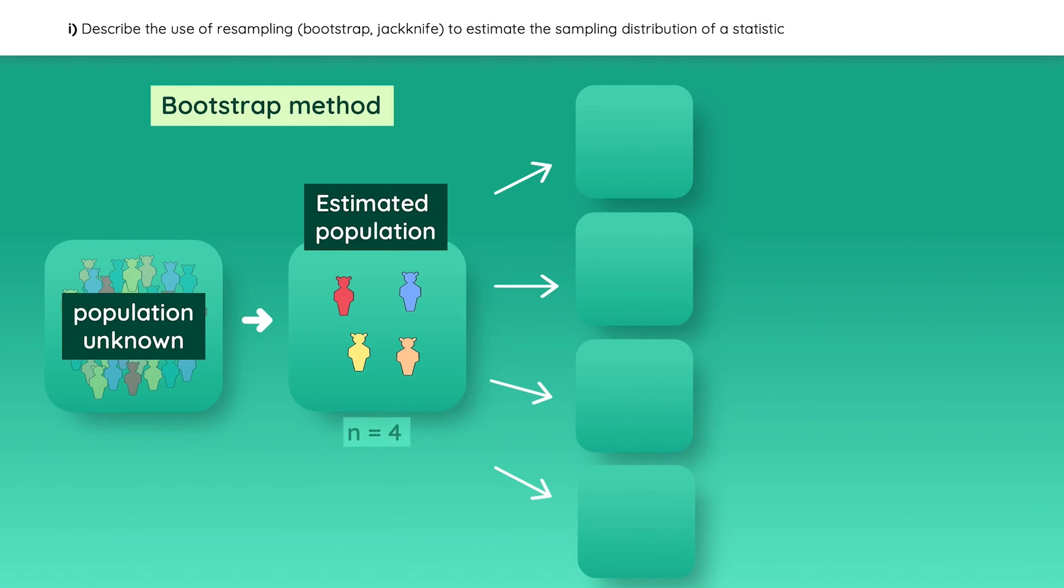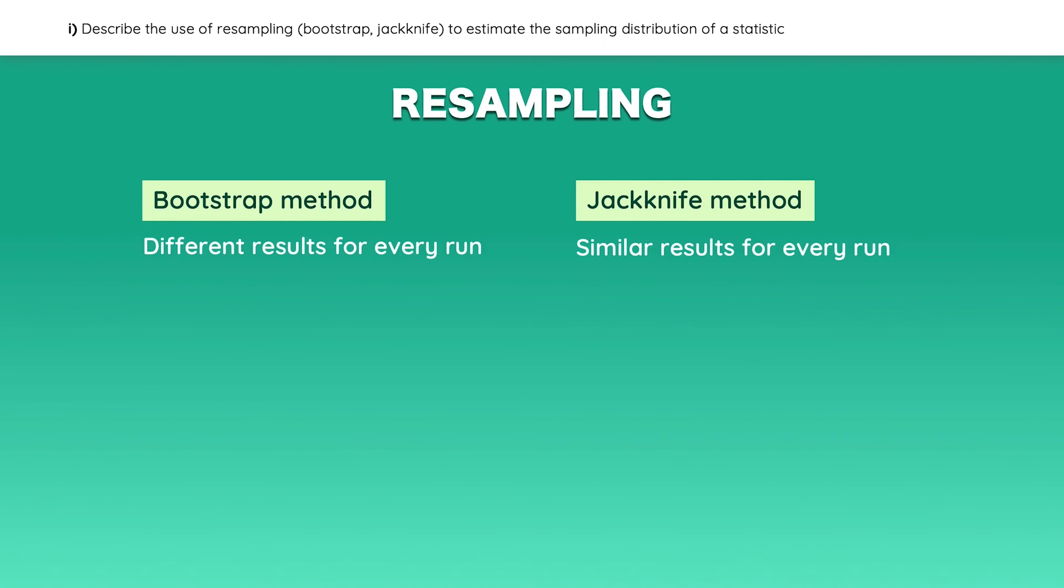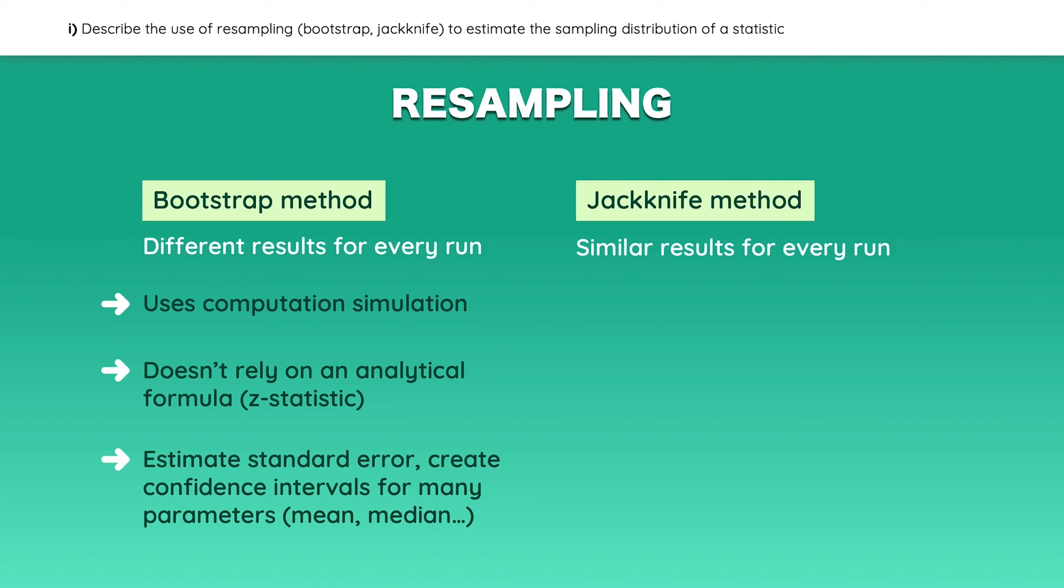The original sample in this case has four observations, so each resample will also have four observations. But here is the key. Once you have randomly selected the first element in the resample, that element is then put back into the original pool before the next element is selected. So there is a possibility that an element will be selected more than once in each resample. Once you have randomly drawn all the resamples and calculated each sample statistic like the sample mean, you can compute a sampling distribution from those sample statistics. A few key points to remember are that this method uses computation simulation and does not rely on an analytical formula like the z statistic. It can be used to estimate the standard error or construct a confidence interval for many parameters such as the mean, median, and so on.